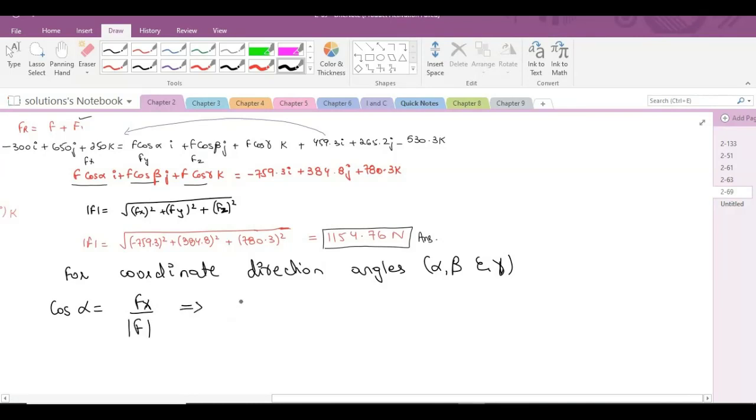So from here, alpha equals cos inverse, and what's the value of Fx? It's negative 759.3 divided by the magnitude of force F, that's 1154.76. So when you solve it, alpha becomes 131.1 degrees.